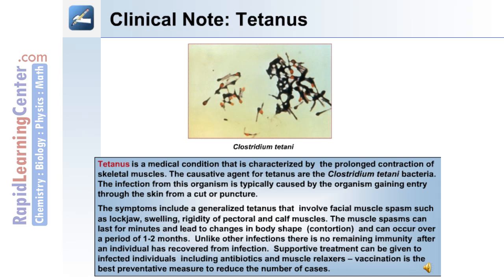A clinical note on tetanus: tetanus is a medical condition characterized by the prolonged contraction of skeletal muscles. The causative agent is Clostridium tetani bacteria, typically gaining entry through the skin from a cut or puncture. Symptoms include generalized facial muscle spasms such as lockjaw, swelling, and rigidity of the pectoral and calf muscles. Muscle spasms can last for minutes and cause contortion, recurring over 1-2 months. Unlike other infections, there is no remaining immunity after recovery. Treatment includes antibiotics and muscle relaxers, and vaccination is the best preventative measure.